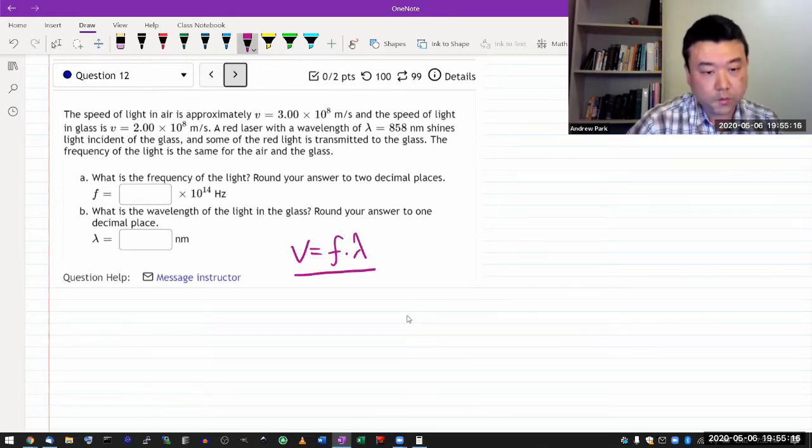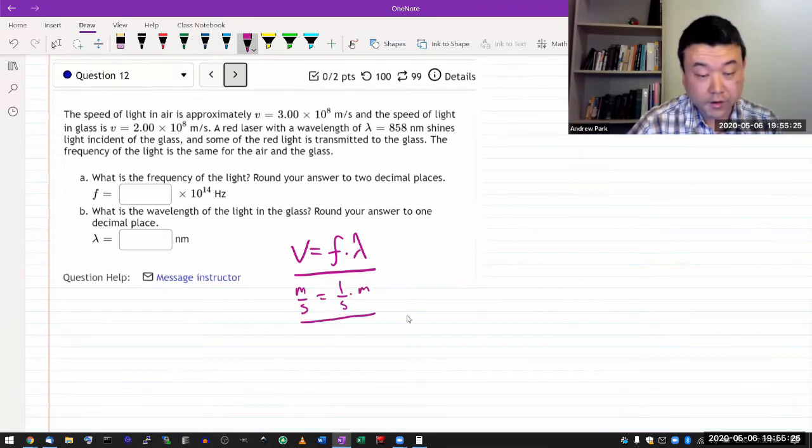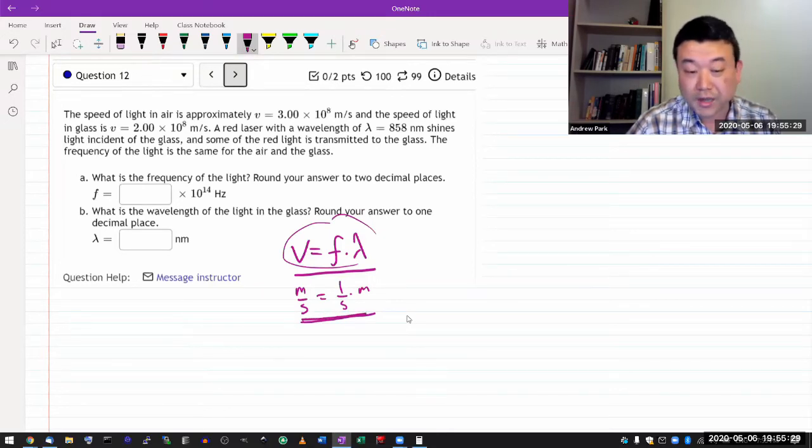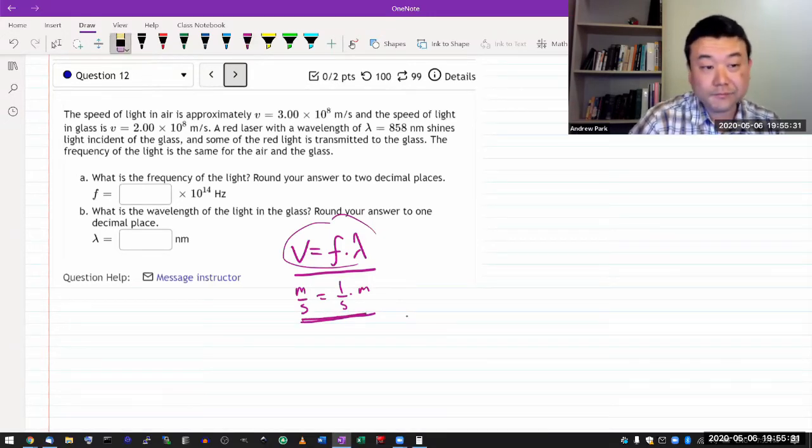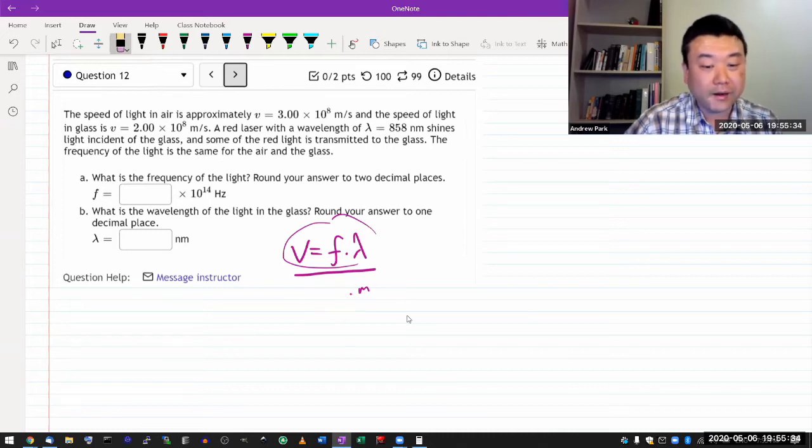As in, you know, wave speed in meters per second is equal to frequency one over second times wavelength in meters; units work out. This is the only combination in which these units can work out, and that happens to be the correct formula that relates wave speed, frequency, and wavelength.